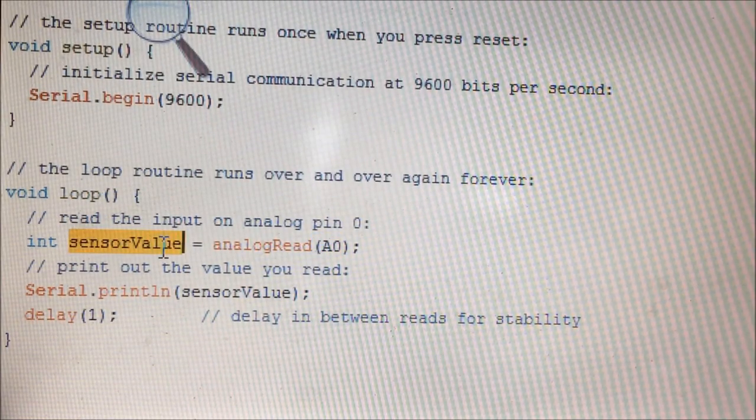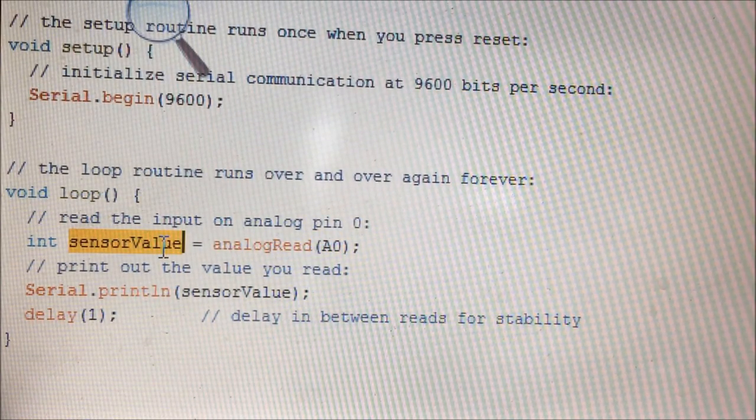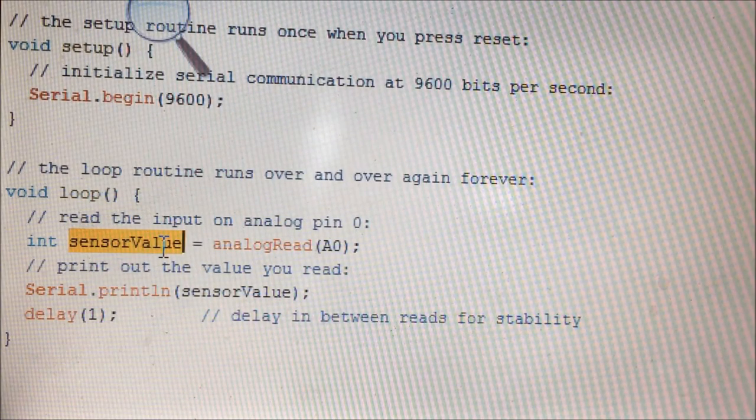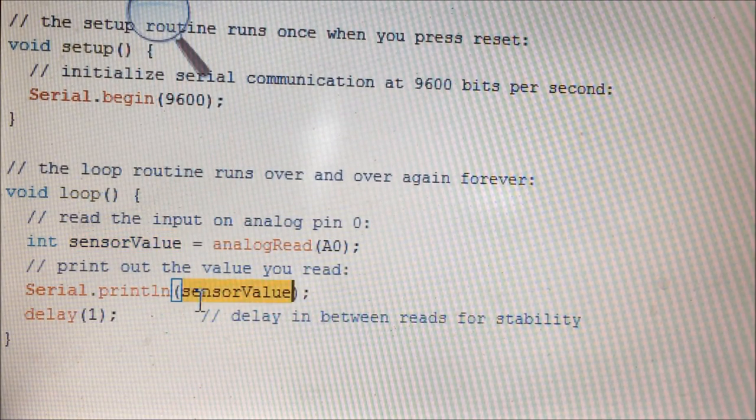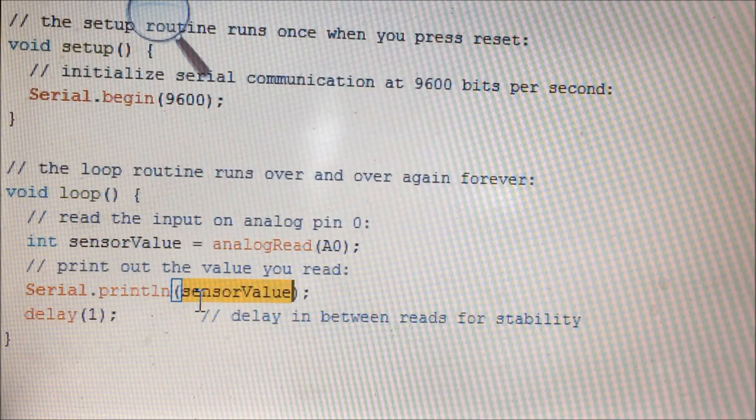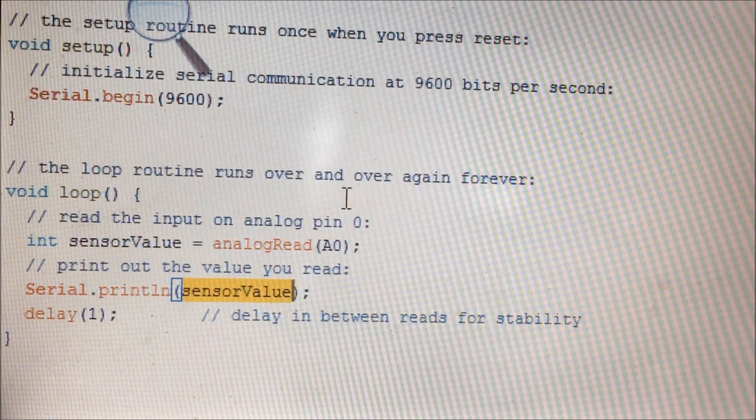And then I am printing out that value. So now I will show you how to check the value which has been obtained at the ADC channel A0.